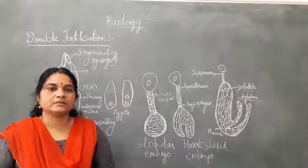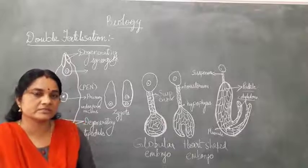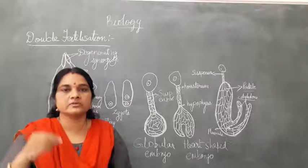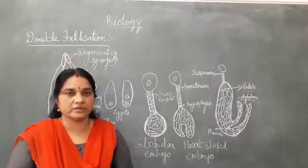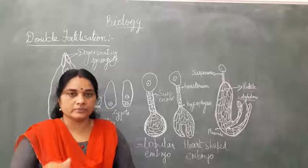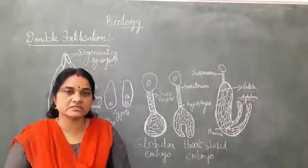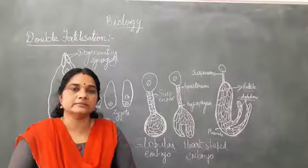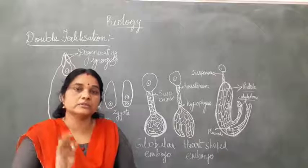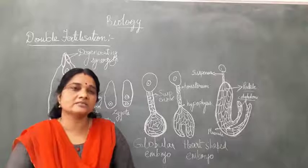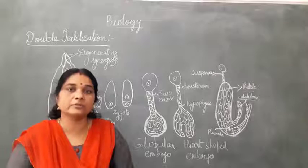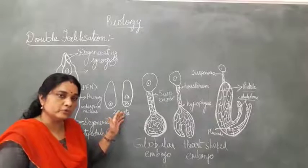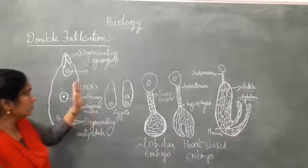Good morning. We continue with the chapter on sexual reproduction in flowering plants. In the previous class, we discussed how the pollen tube grows from the stigma into the style and then into the ovary at the lower end of the gynoecium. The pollen tube carries one gamete which divides mitotically into two gametes. It enters the ovary through the synergids, which have filiform thickenings — whose function is to guide the pollen tube. Once this is done, the synergids degenerate.